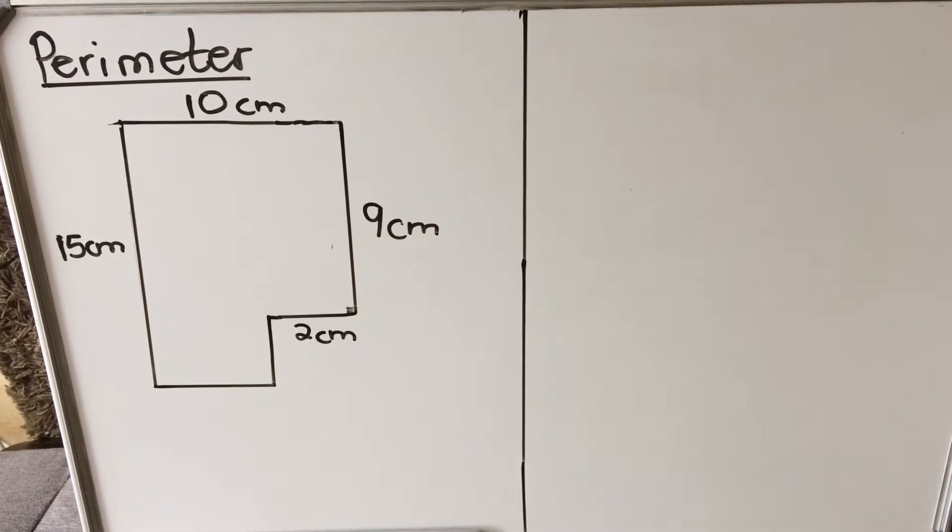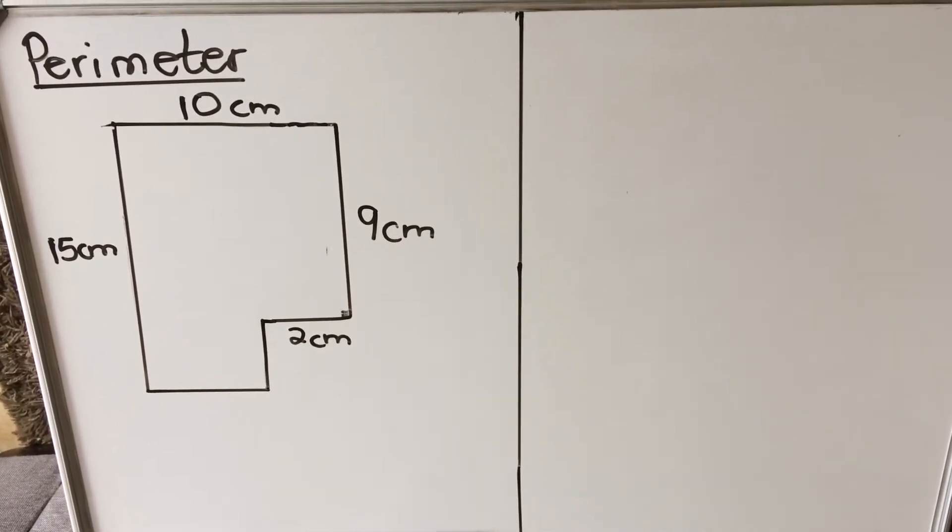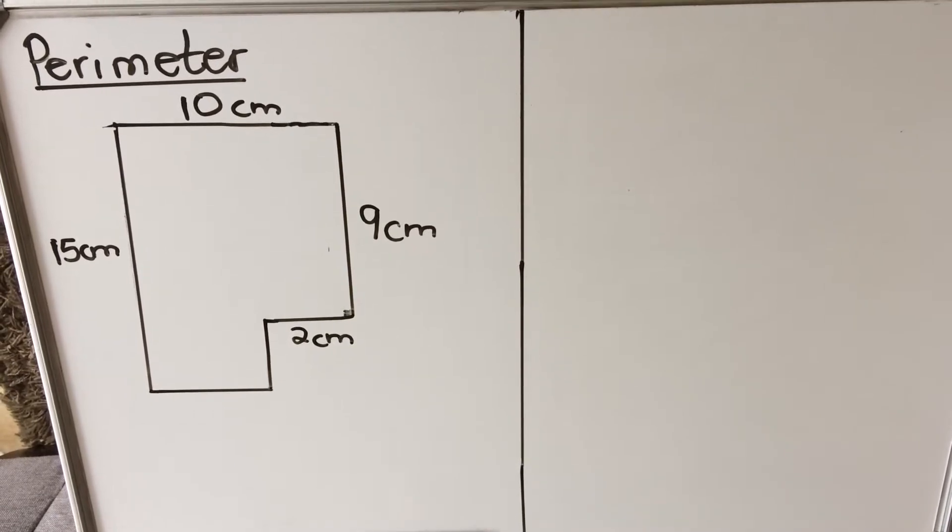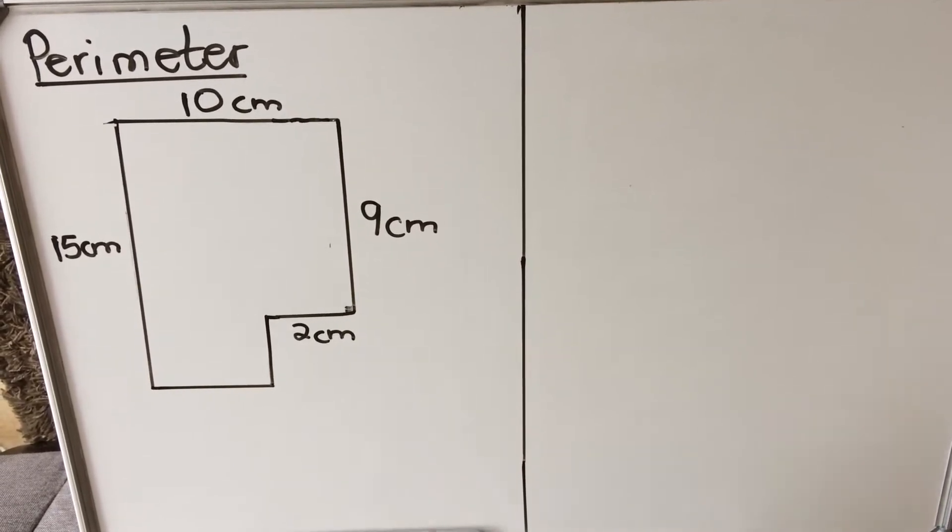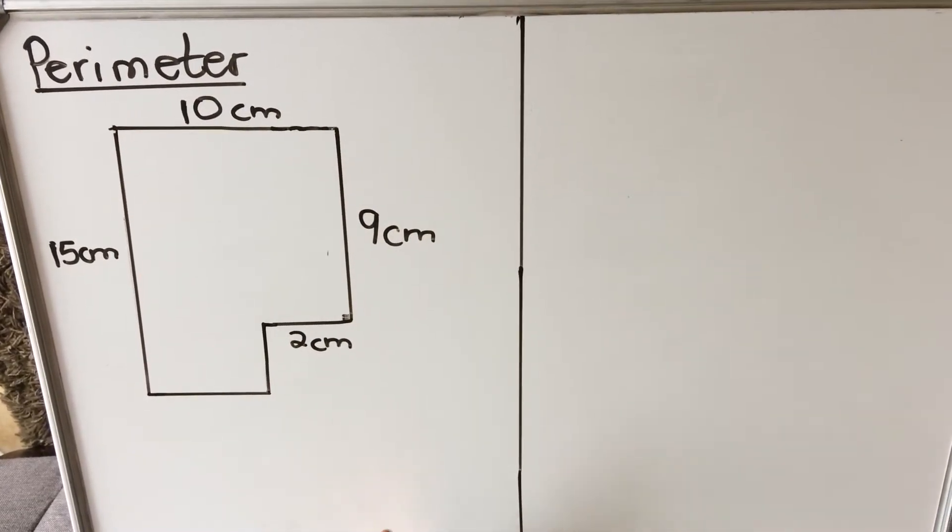Hello everyone, this is a lesson on perimeter and how we calculate perimeter and area of irregular shapes. When we say irregular shape, we mean a shape like this one. This shape is not a rectangle, it's not a square, it's irregular.